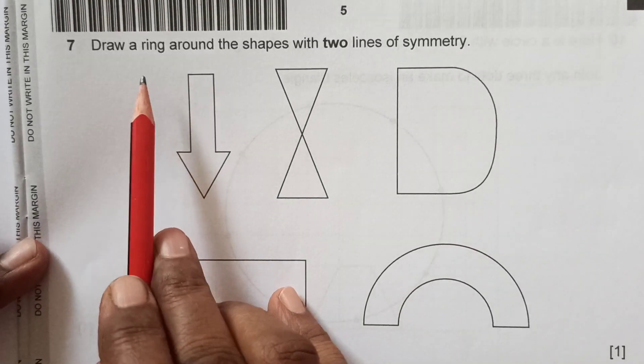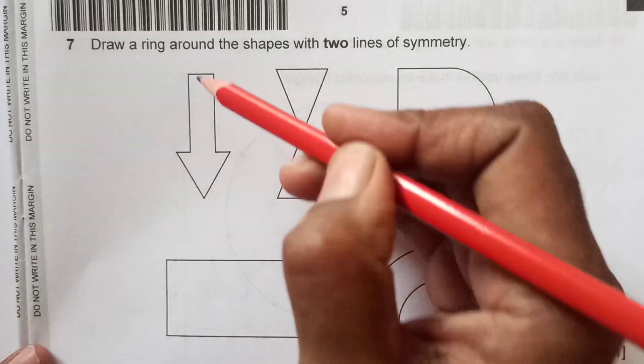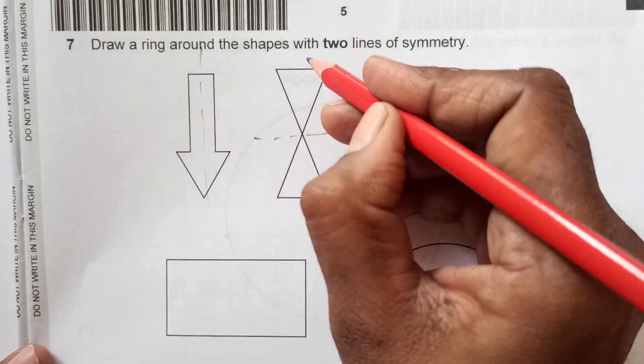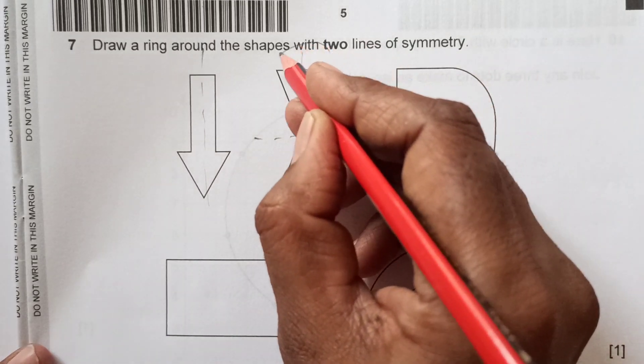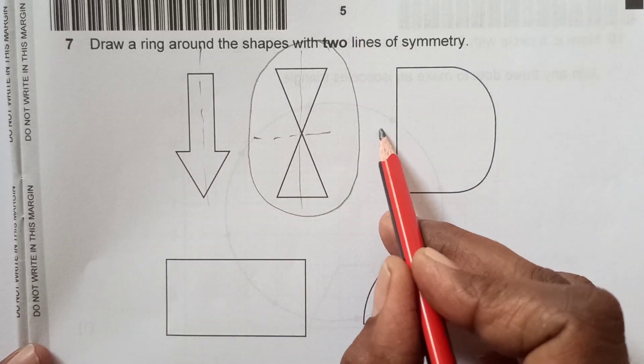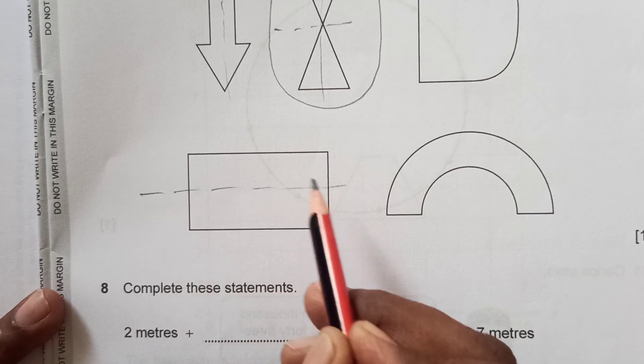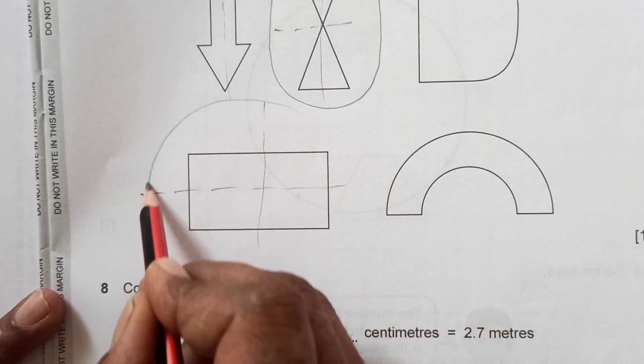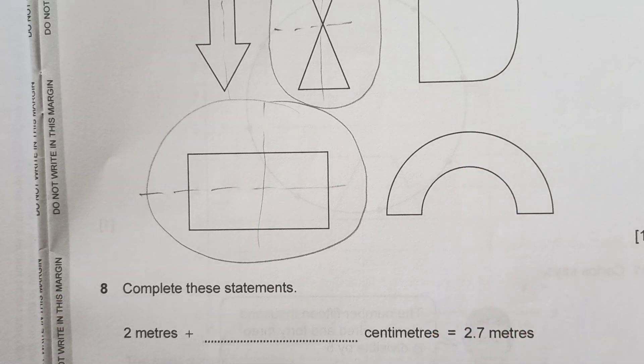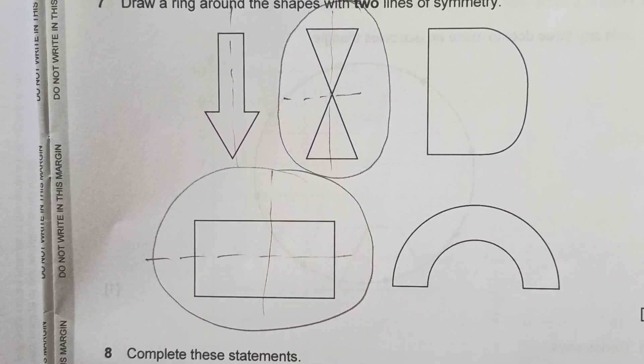Number 7: Draw a ring around the shapes with 2 lines of symmetry. Here we have only 1 line of symmetry. In this we will have 1 and 1, 2 lines of symmetry, so we can draw a ring around here. Here we will have only 1 line of symmetry. Here again we will have 2 lines of symmetry. These 2 shapes we are going to ring here. This is only 1 line of symmetry, so that is not satisfying the condition.